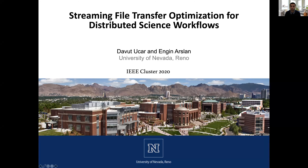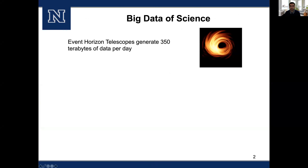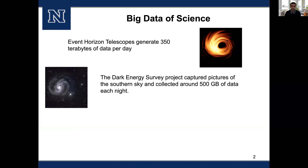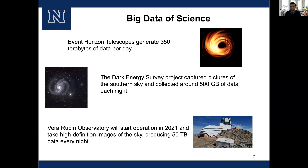As you are all familiar, many science projects generate large volumes of data. For example, event horizon telescopes generate 350 terabytes of data per day. The Cosmology Project Dark Energy Survey captured pictures of the southern sky and collected around 500 gigabytes of data every night. A successor of that project, the Rubin Observatory, is expected to start operation in 2021 and will take high definition images of the sky producing 50 terabytes of data every night.